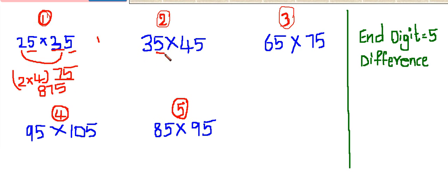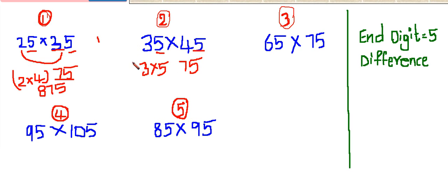See one more example. Here also the unit digit is 5 and the difference of the two numbers is 10, so we can use this shortcut trick. The first two digits are 75 — there is no change. And multiply 3 into the next digit of 4, that is 5. 3 times 5 is 15. So 1575 is the answer.